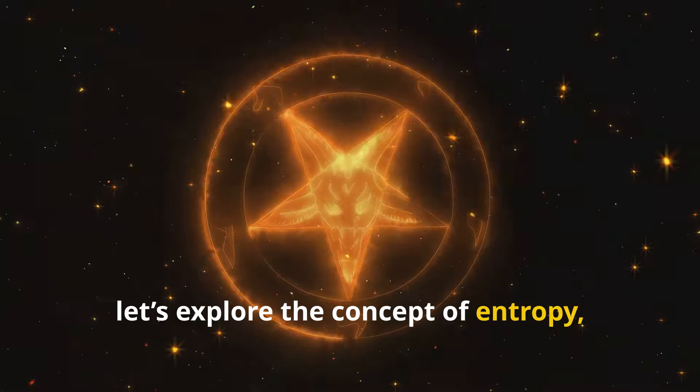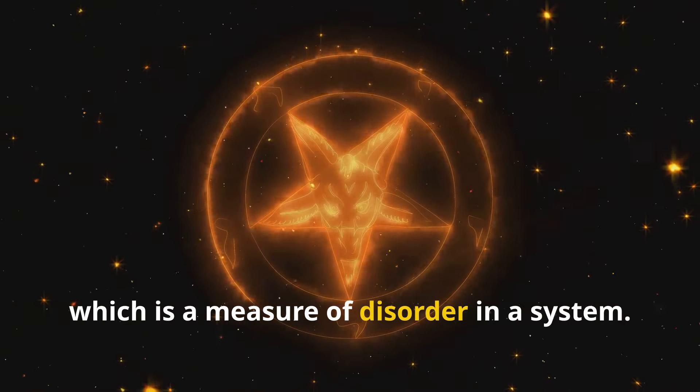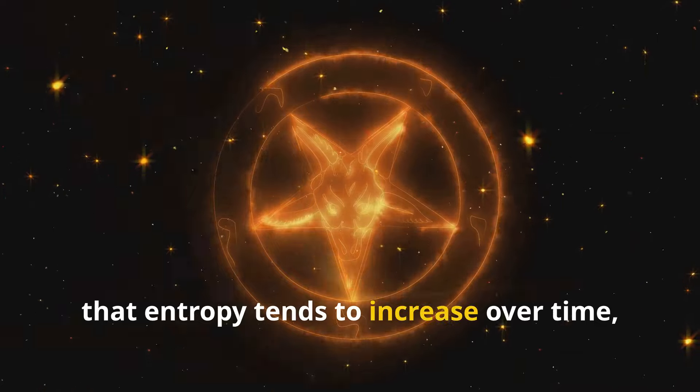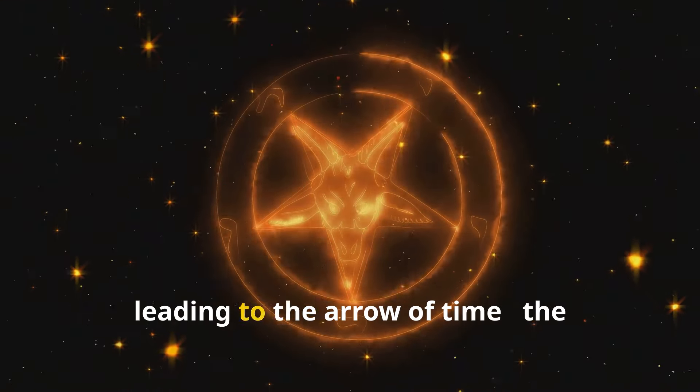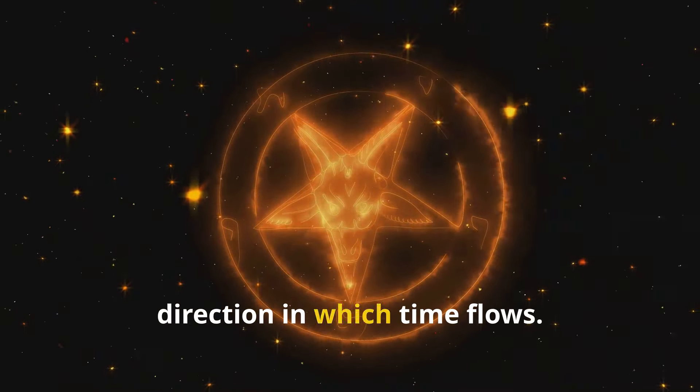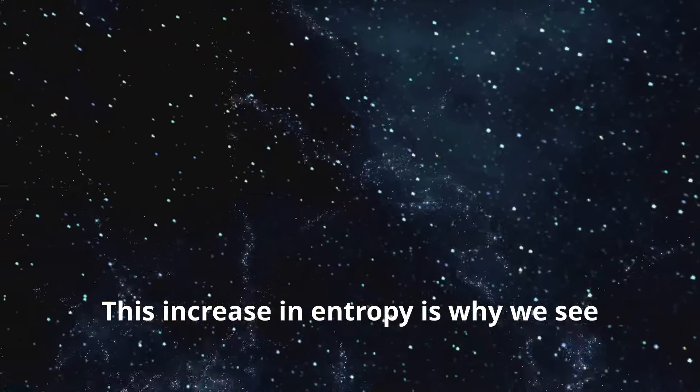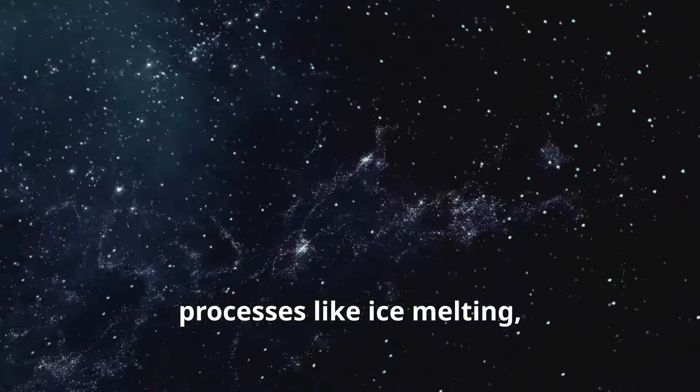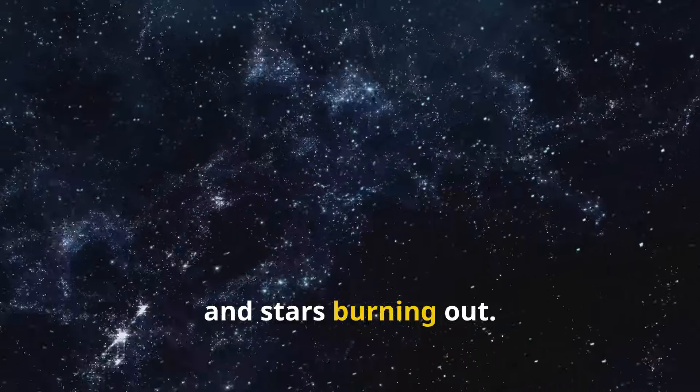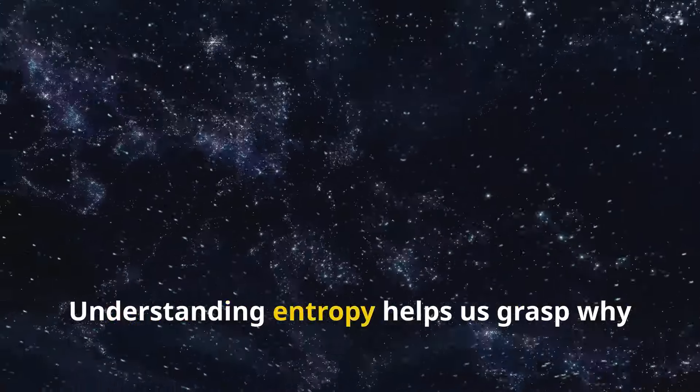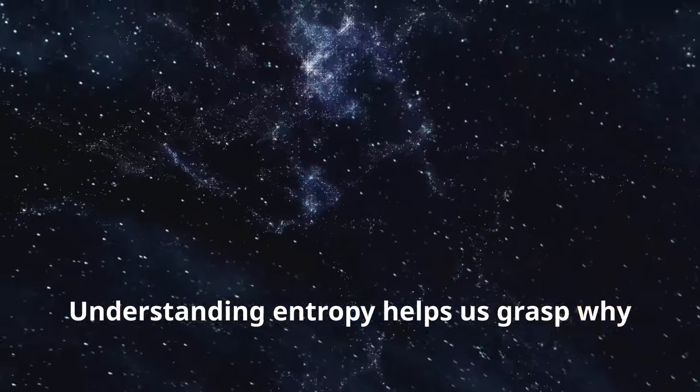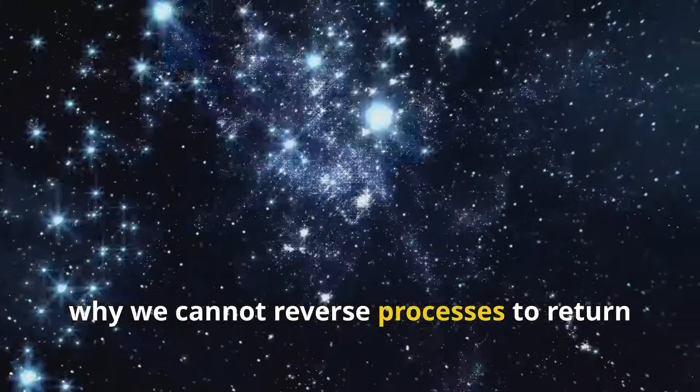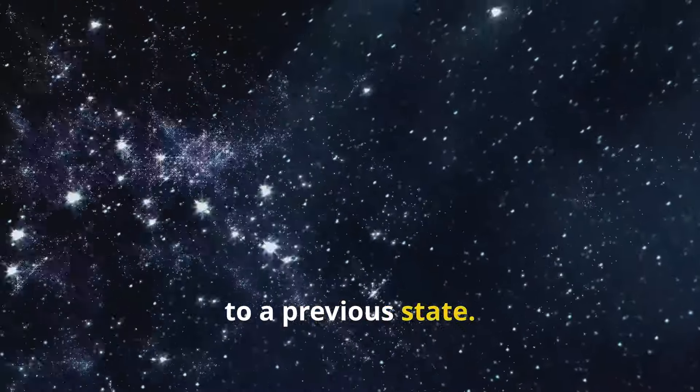Now let's explore the concept of entropy, which is a measure of disorder in a system. The second law of thermodynamics states that entropy tends to increase over time, leading to the arrow of time, the direction in which time flows. This increase in entropy is why we see processes like ice melting, buildings crumbling, and stars burning out. Understanding entropy helps us grasp why time seems to move in one direction, and why we cannot reverse processes to return to a previous state.